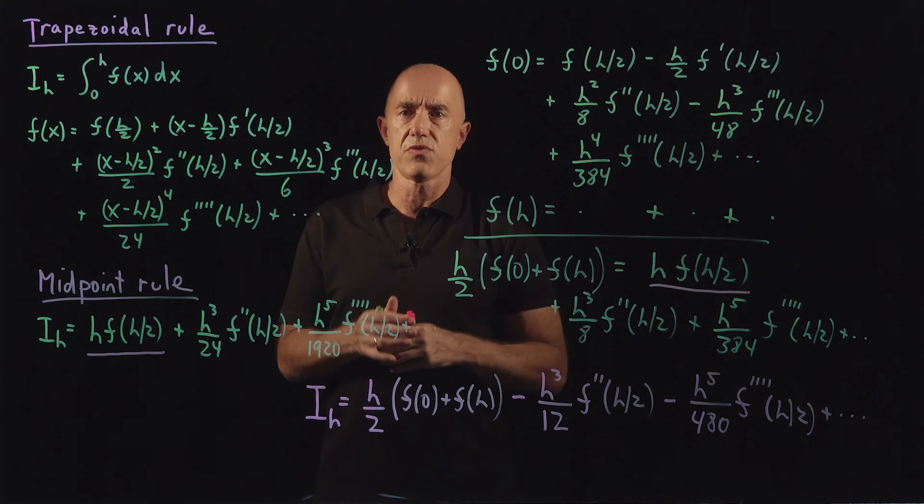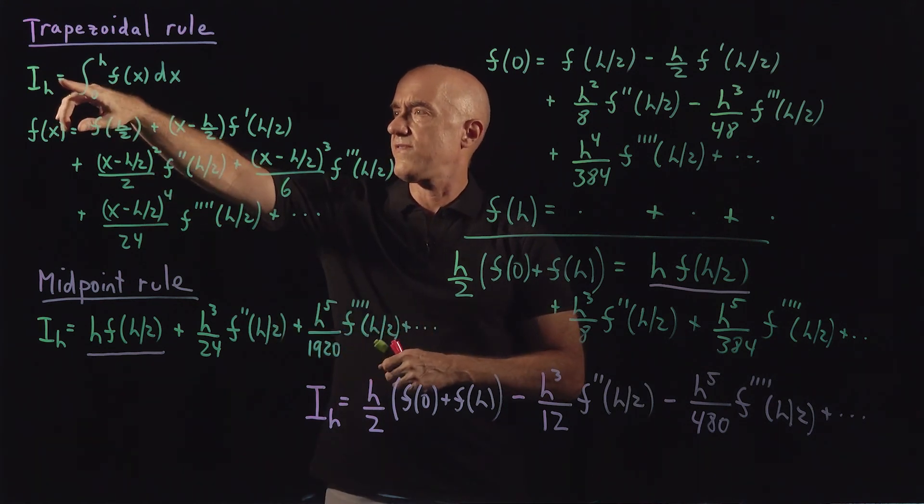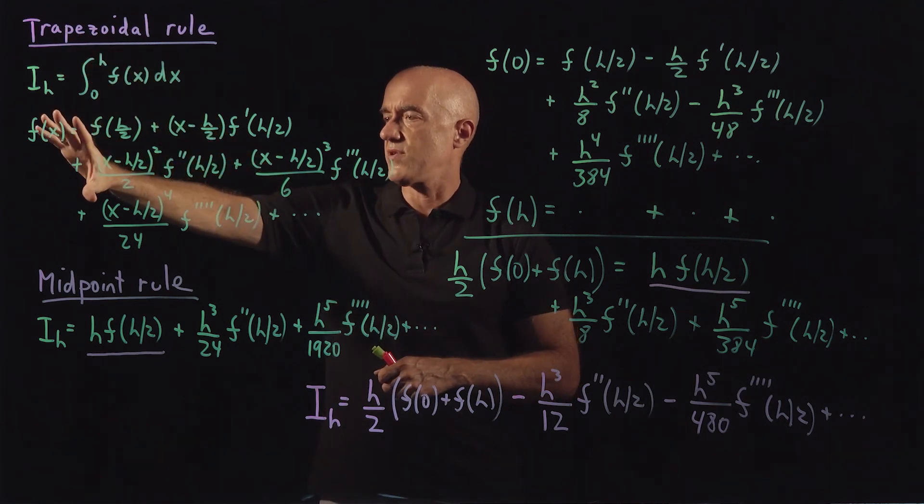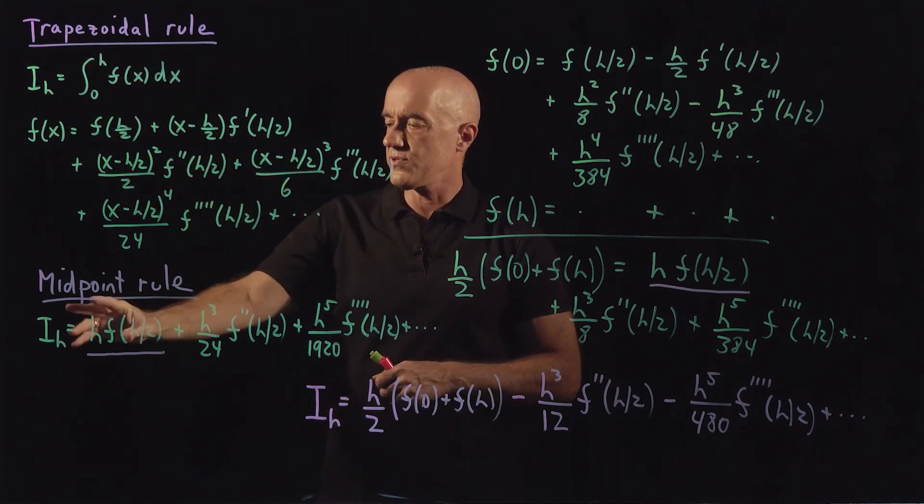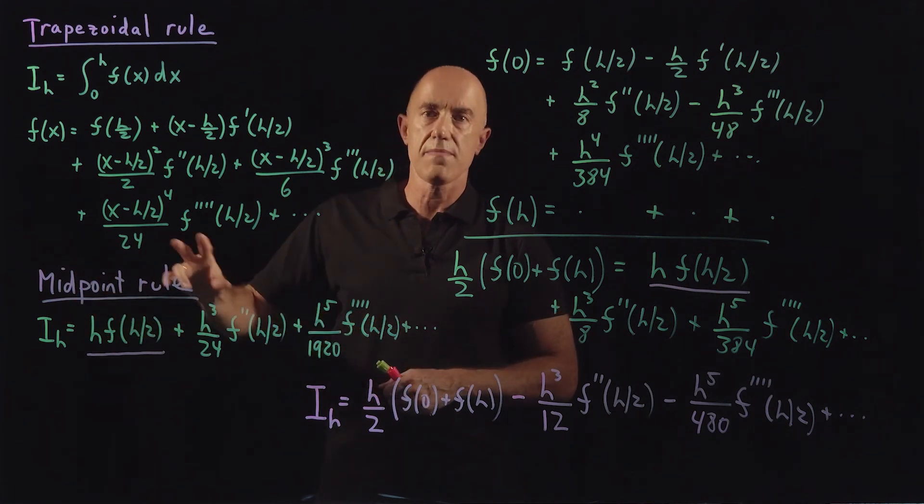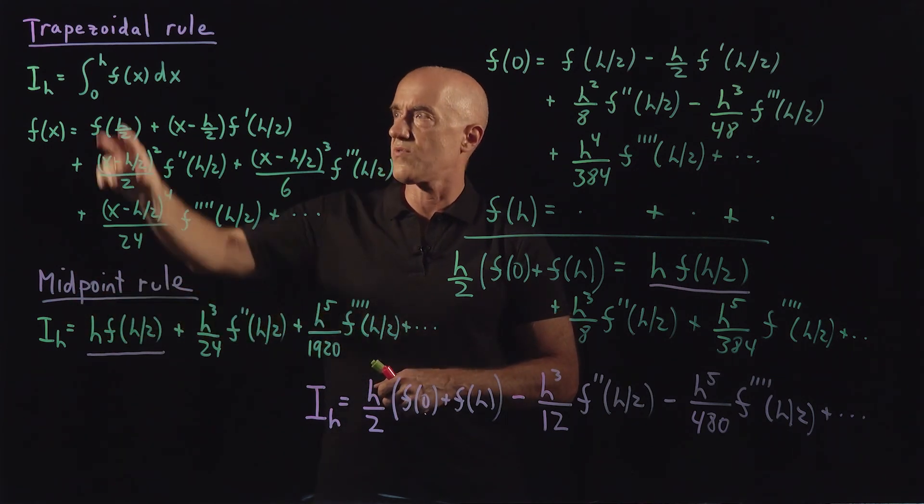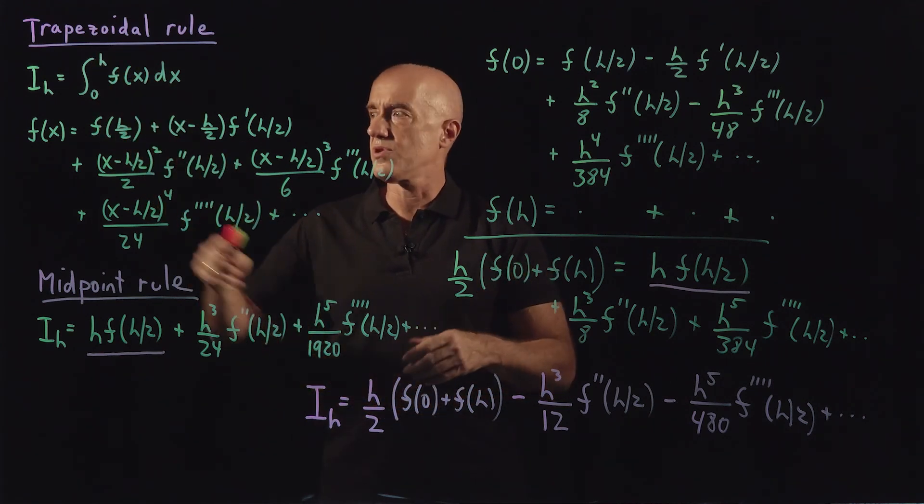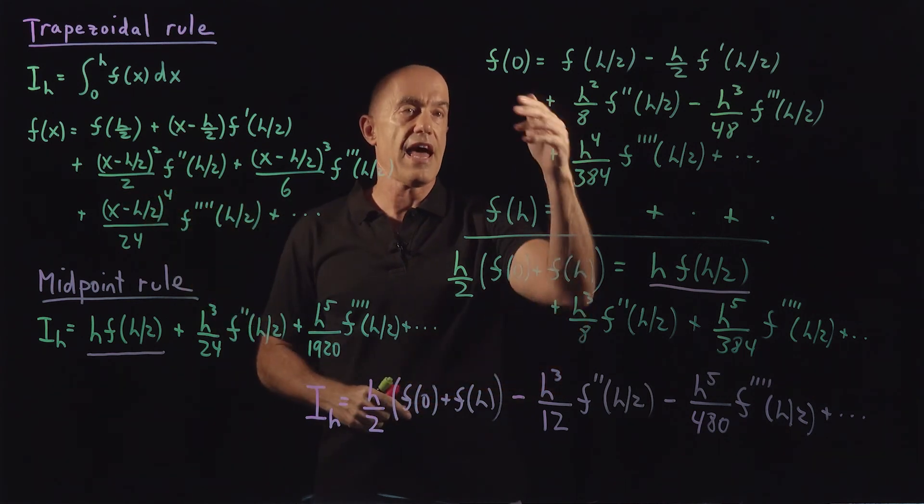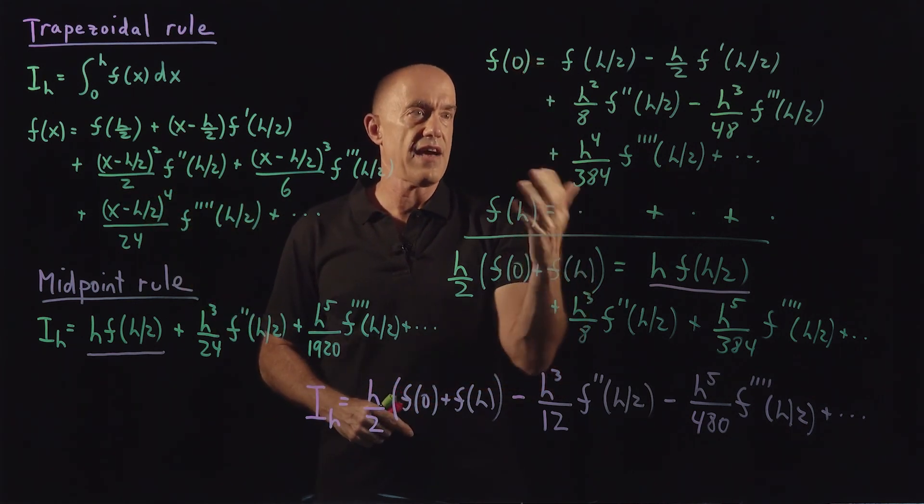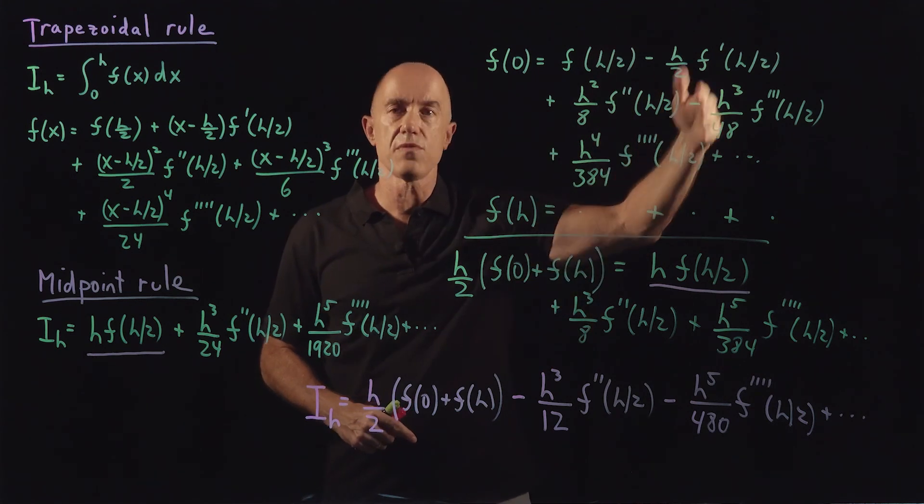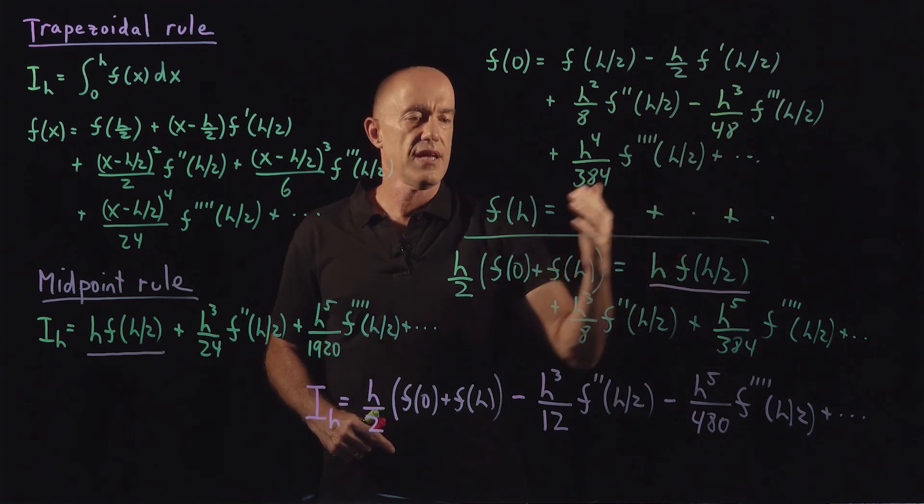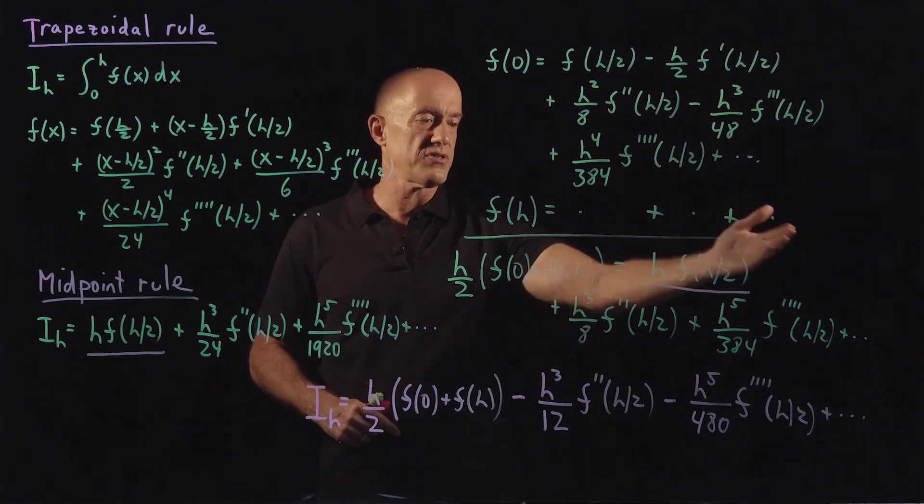So let me quickly review the derivation. We're looking to find the integral from 0 to h of f(x) dx. We have a Taylor series for f, which we use to derive the midpoint rule. So we can make use of the midpoint rule in deriving the trapezoidal rule. To derive the trapezoidal rule, we can look at this Taylor series at f(0) and at f(h). All the terms are the same, except that at f(0) we have alternating signs. At f(h), all the signs are positive.